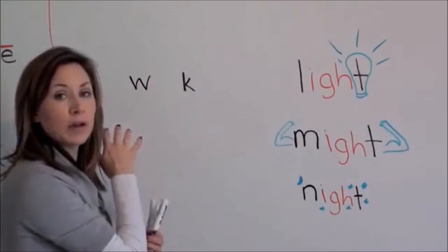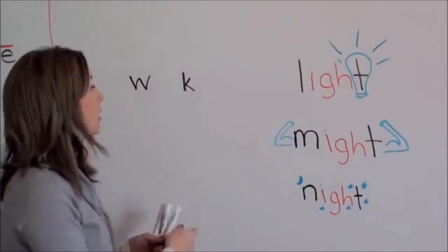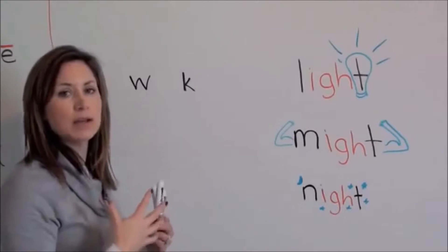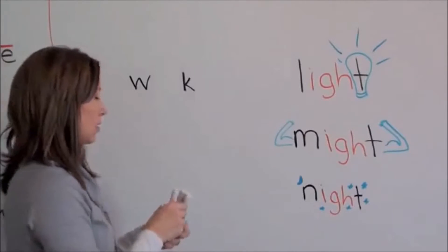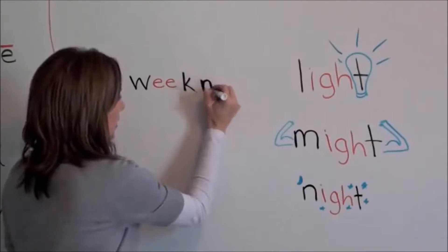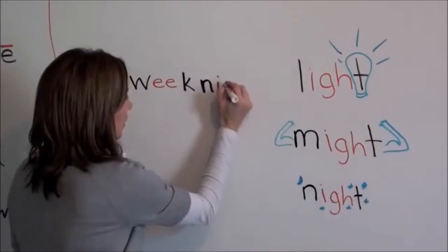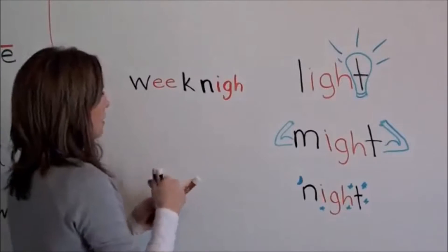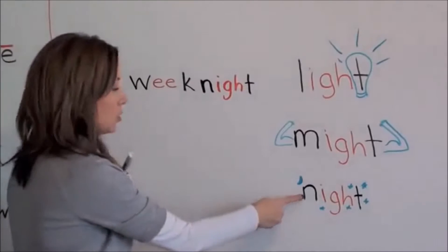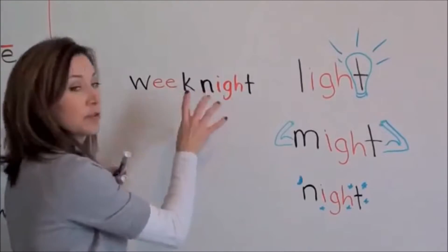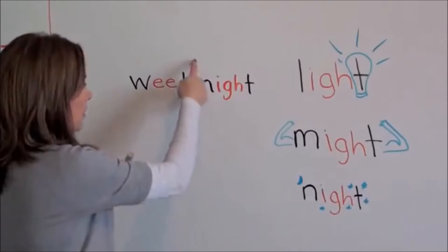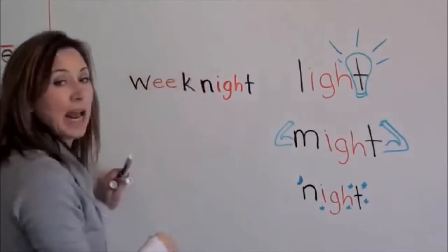Normally I would write week in all black since it doesn't have the I, G, H concept that we're demonstrating. But I choose to do the E, E in red because that's a concept that my son has already learned and I want him to keep recognizing that. So I will do the E and E in red so he can recognize that. And then the N in black, the I, G, H of course, in red. And the T in black.